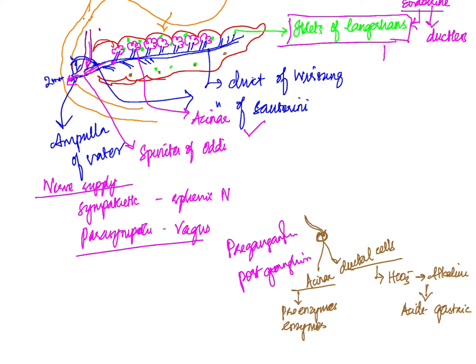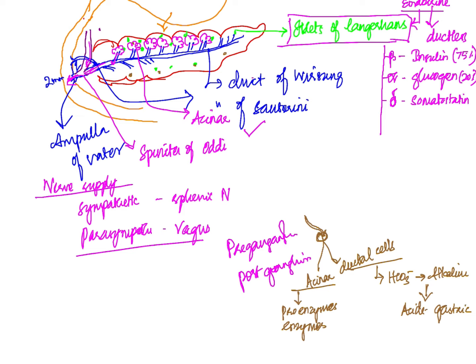Different types of cells present in the endocrine islets are: beta cells, which produce insulin; alpha cells, which produce glucagon; delta cells, which produce somatostatin; and epsilon cells, which produce ghrelin.